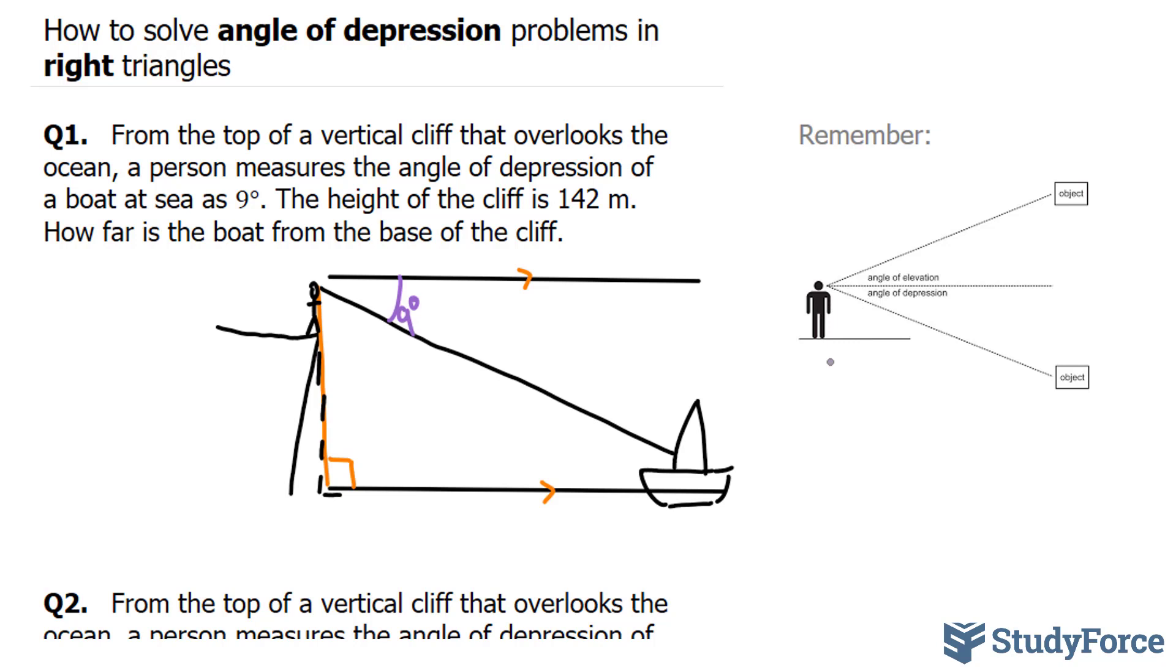So to answer this question, they want us to find out how far the boat is from the base of the cliff. So we need to find out what this is. Now, of course, given that this also makes a 90 degree triangle, what we could do is find out the length of this side using one of our trigonometric ratios. We know that the height of the cliff is 142 meters. That applies to both of these lines.